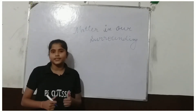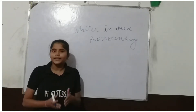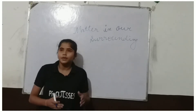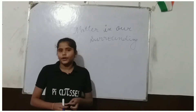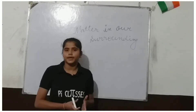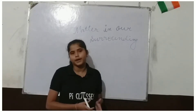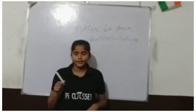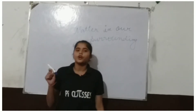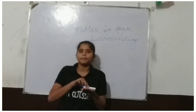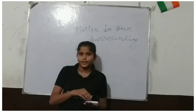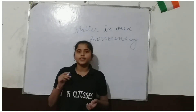So the very first thing is: what is matter? Matter is anything that occupies space and has some mass. Any object or body in the universe which has some mass and occupies some space is considered as matter. For example, I am holding this marker. This marker has some mass and it also occupies some space — if I keep it on my palm, it is going to occupy some space. So this is matter.